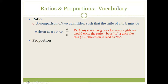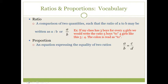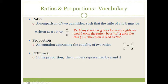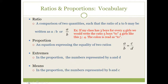What is a proportion? A proportion is an equation expressing the equality of two ratios. For example, a fraction A over B is equal to C over D, where A, B, C, and D are any real numbers. The extremes in the proportion are the numbers represented by A and D, and the means are the numbers B and C.